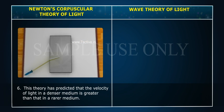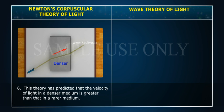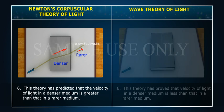Point 6: This theory has predicted that the velocity of light in a denser medium is greater than that in a rarer medium.